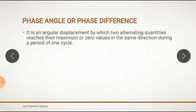Phase angle or phase difference: it is an angular displacement by which two alternating quantities reach their maximum or zero values in the same direction during one cycle.